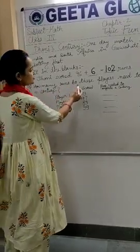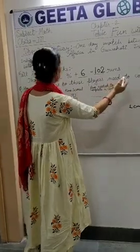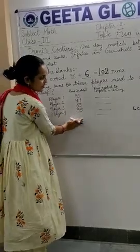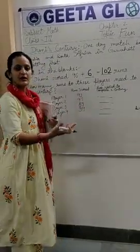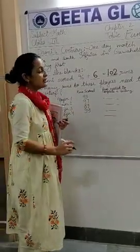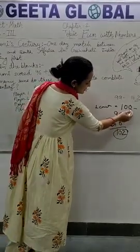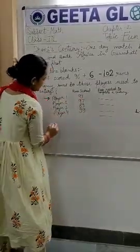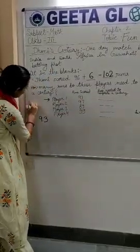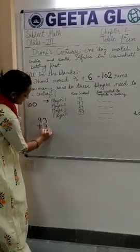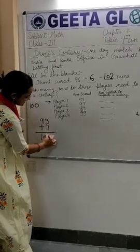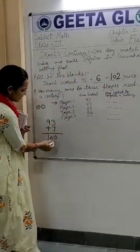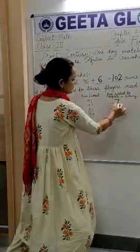How many runs do these players need to complete a century? अब कुछ players दे रखे हैं जिन्होंने इतने numbers score किये हैं। इन्हें एक century बनाने के लिए कितने runs चाहिए होंगे? We already know century में total hundred runs होते हैं। First player के total runs हैं 93। तो 93 में plus 7 करें तो total 100 हो जाएगा। Runs needed to complete a century — उसे 7 runs चाहिए। Answer will be 7.